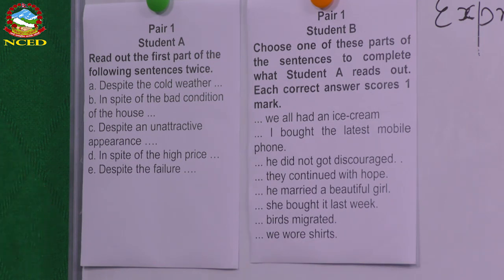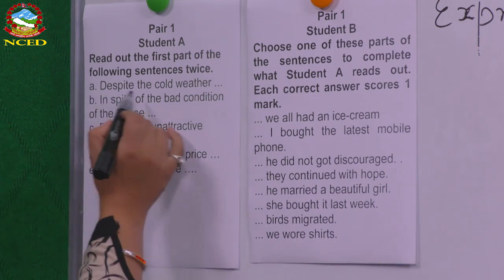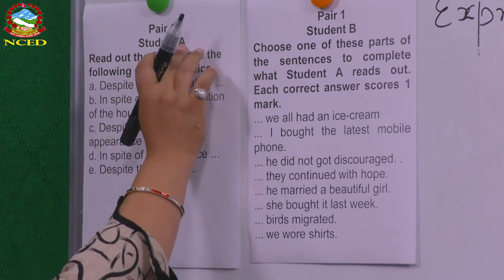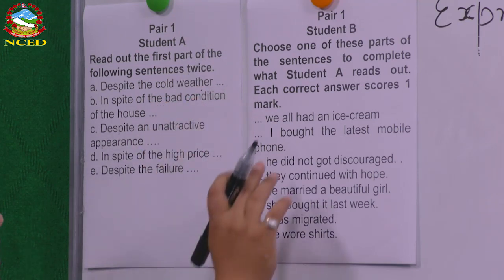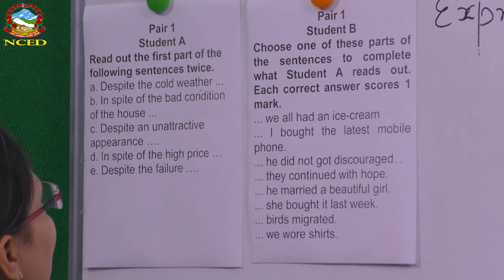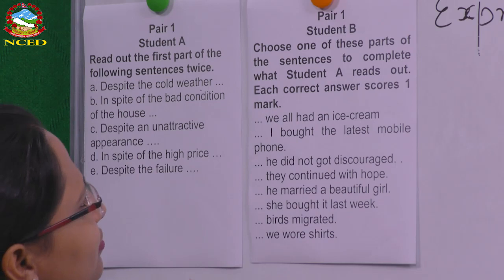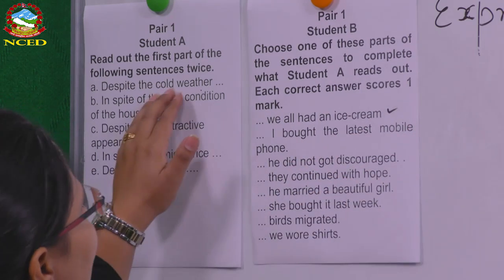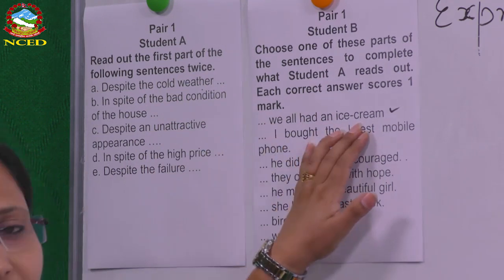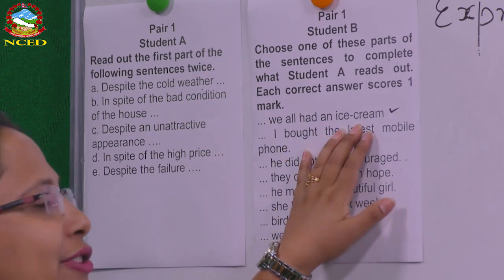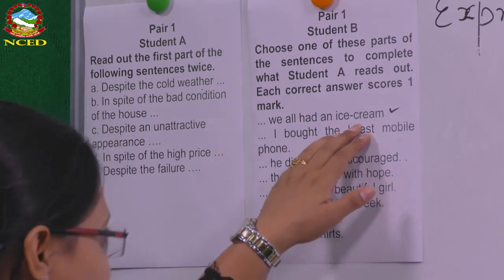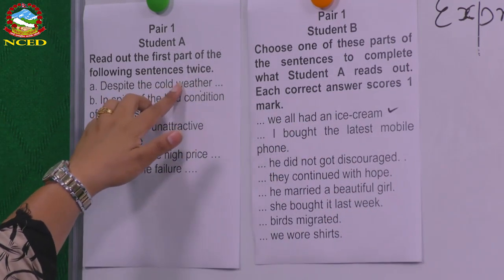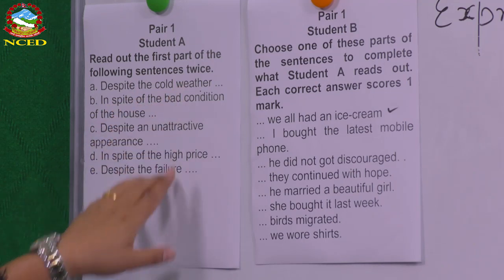Let's try one: 'Despite the cold weather' is the first part of the sentence that student A speaks out. What can be the relevant ending? 'Despite the cold weather, we all had an ice cream' — we don't usually have ice cream in cold weather, but here we did. That could be an ending to this part.